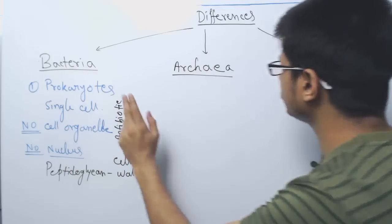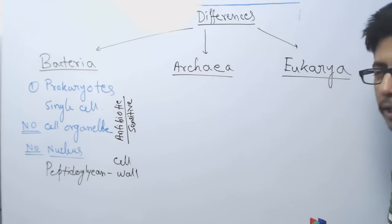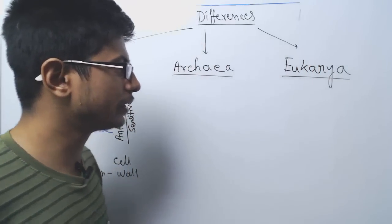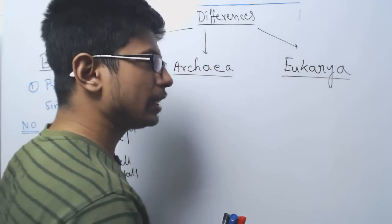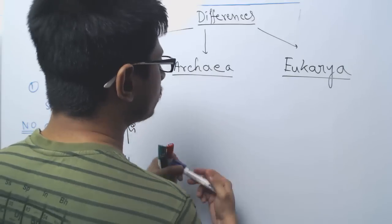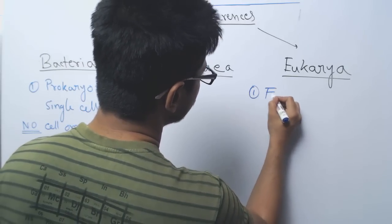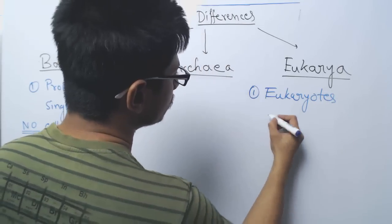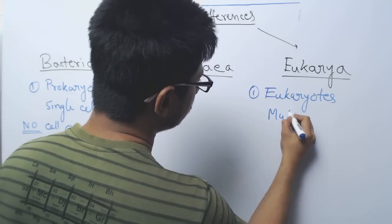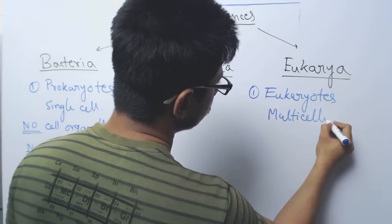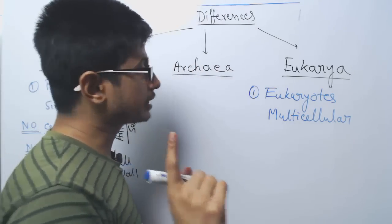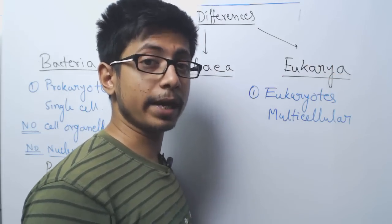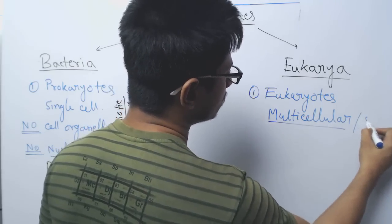Now if you look at the differences, you will find so many. Eukarya, on the other hand, are eukaryotic organisms - eukaryotes. They are multicellular organisms, but there are some single cell eukaryotes also, known as parasites. Multi or single.